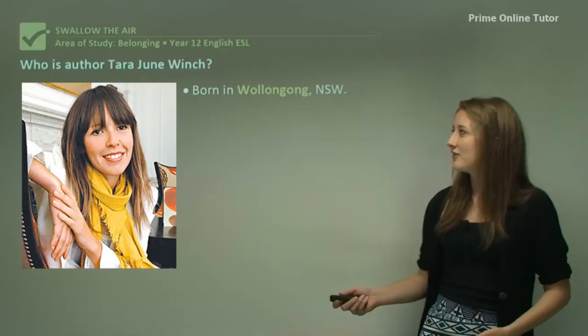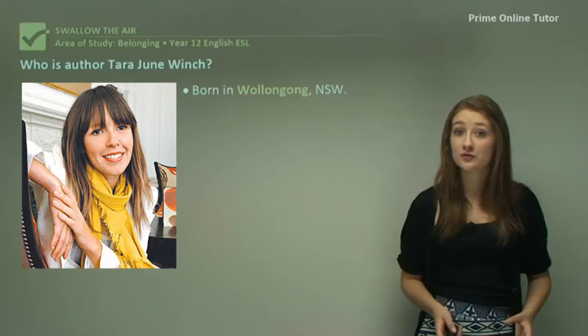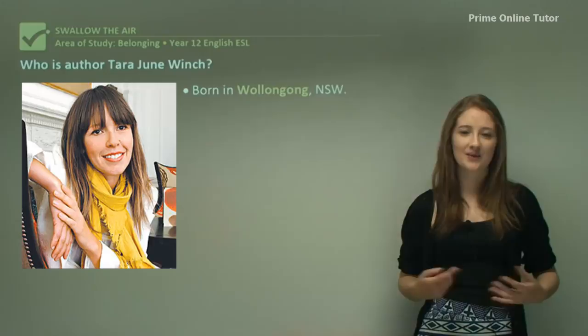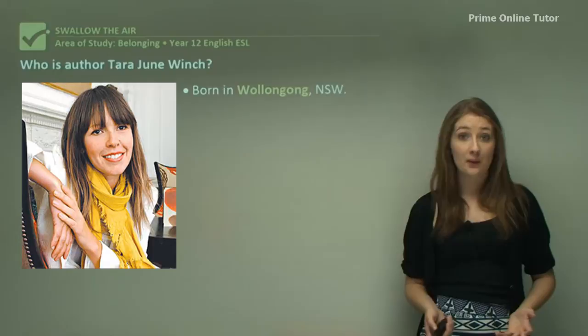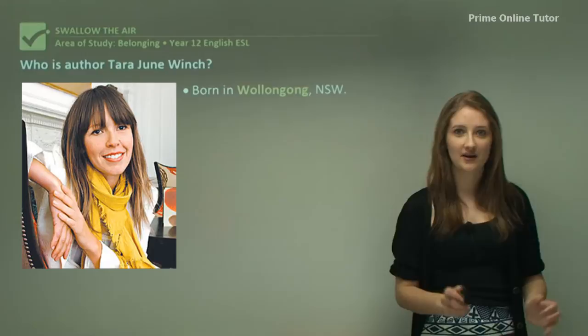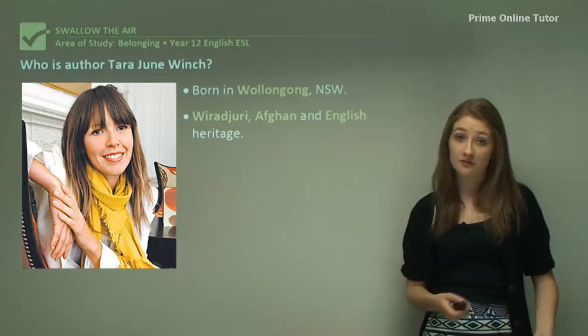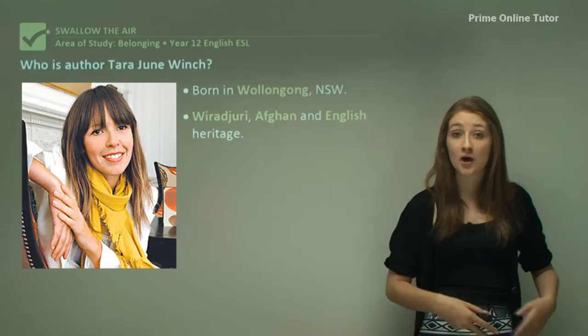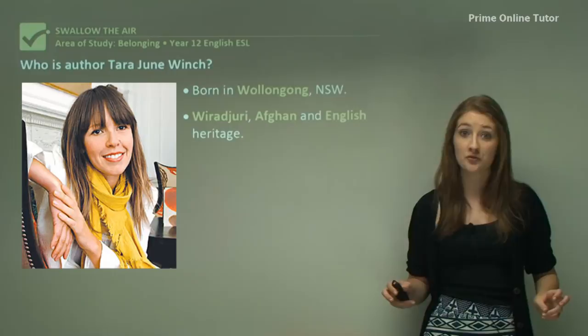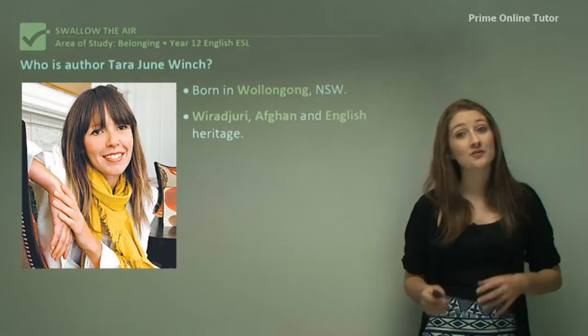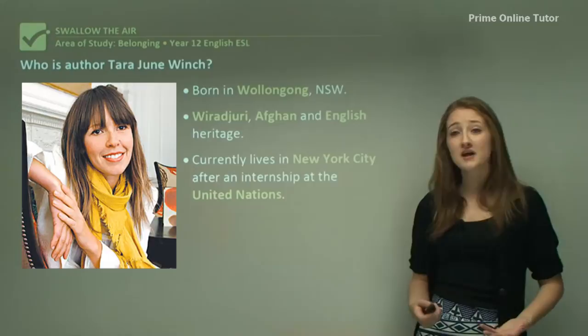Now let's take a look at the author of this novel, Swallow the Air. The author is Tara June Winch, and this is actually her first novel, which you can definitely see in the way that she writes. Tara June Winch was born in Wollongong, New South Wales — born in Australia, and that's definitely reflected by her very Australian focus. She is Wiradjuri, Afghan, and English in heritage, so she has this very multicultural mix: Aboriginal, a Middle Eastern background, and the traditional WASP Australian culture. This way in which three cultures meet for her obviously influences the way she deals with culture in her text.